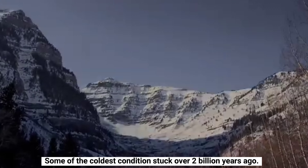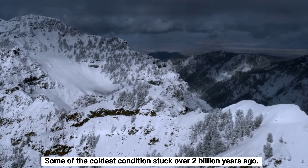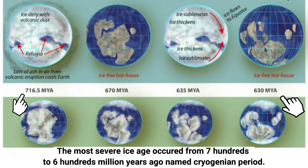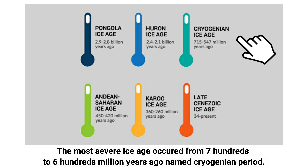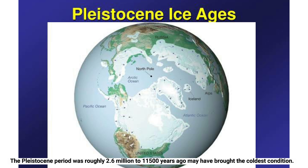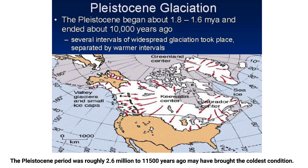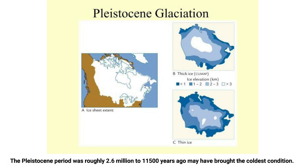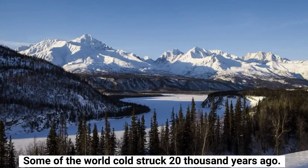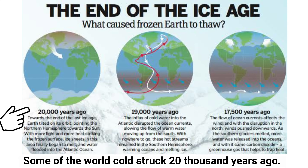Some of the coldest conditions struck over 2 billion years ago. The most severe ice age, from around 700 to 600 million years ago, is named the Cryogenian period. The Pleistocene period, roughly 2.6 million to 11,500 years ago, may have brought the coldest conditions, with some of the world's coldest conditions striking around 20,000 years ago.